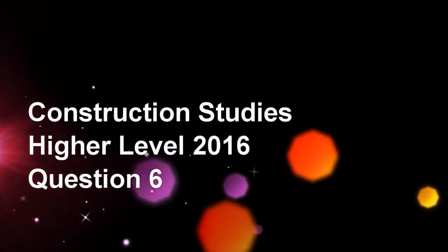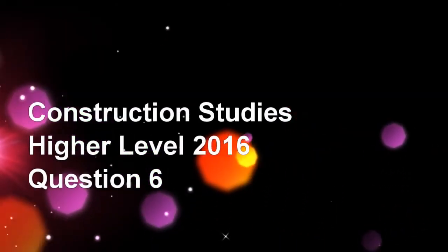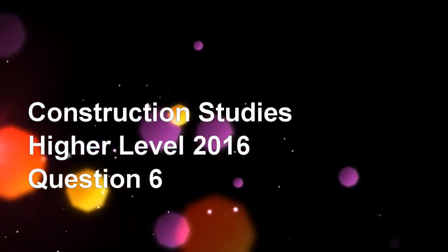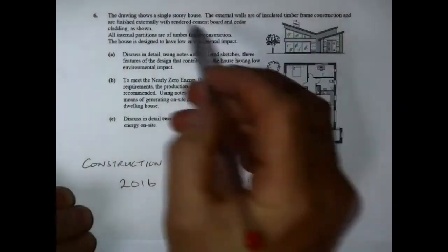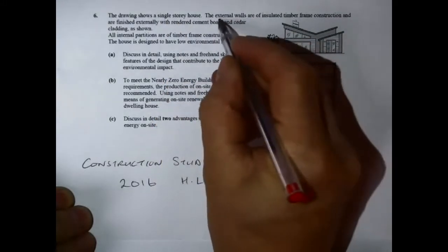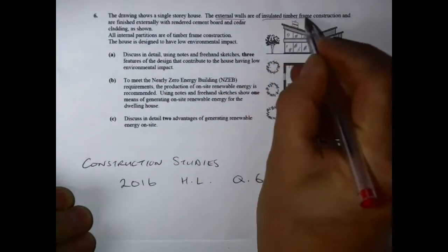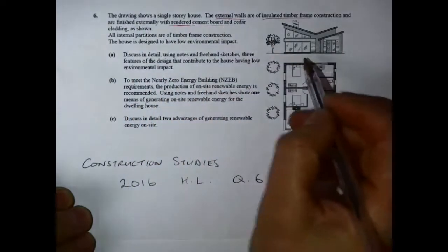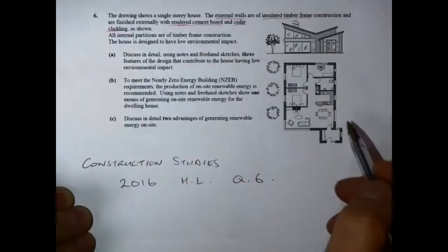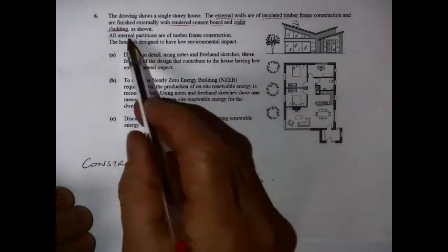In this video I'm going to take a look at question six from the 2016 higher level construction studies paper. It's normally a question that focuses on low environmental impact. In the question we have here, we are given a drawing of a single story realm with external walls of timber and insulated timber frame construction rendered with cement board and cedar cladding.